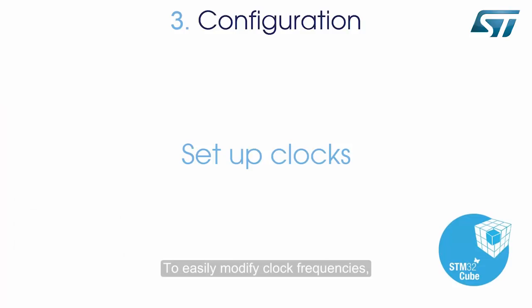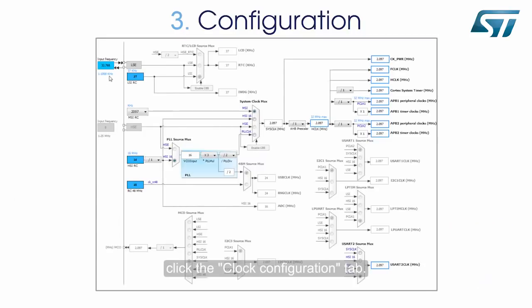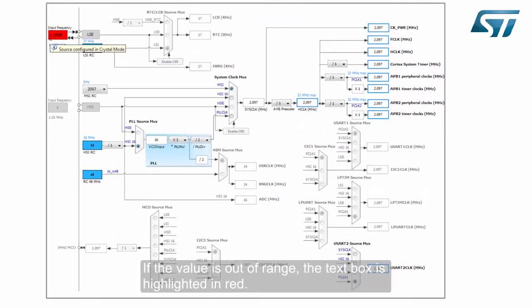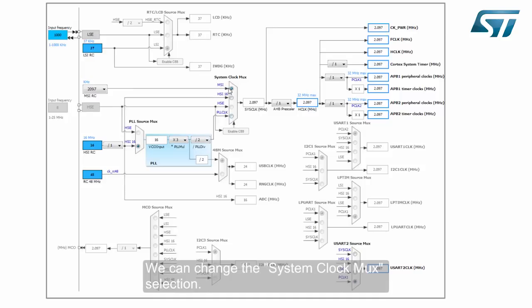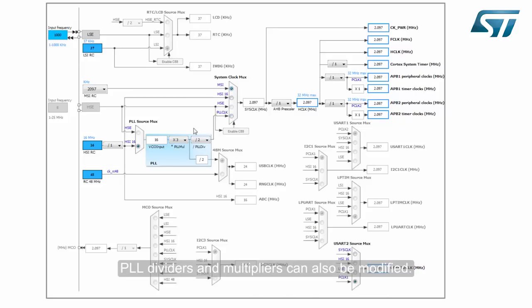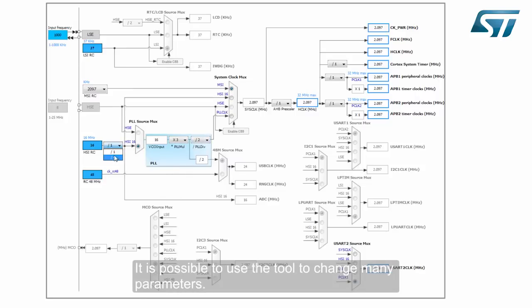To easily modify clock frequencies, click the Clock Configuration tab. We can change the input frequency — if the value is out of range, the text box is highlighted in red. We can change the system clock MUX selection, and PLL dividers and multipliers can also be modified. It is possible to use the tool to change many parameters. In our case, the default settings are the correct ones.